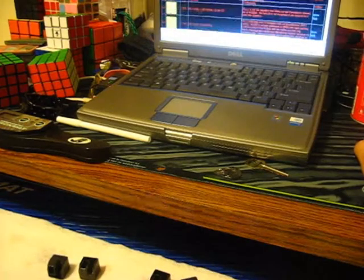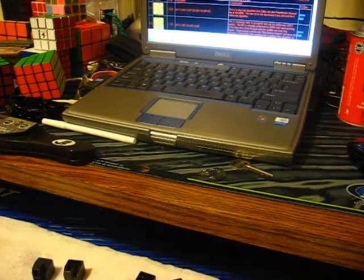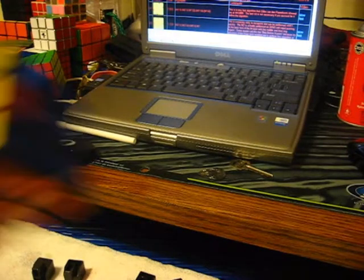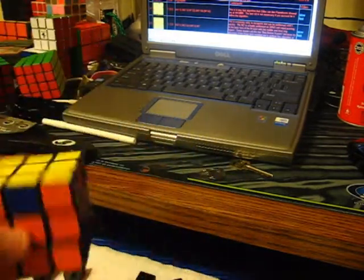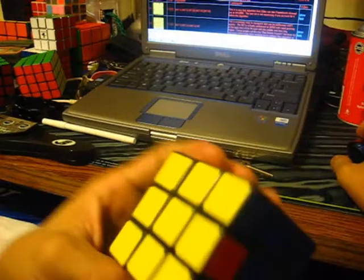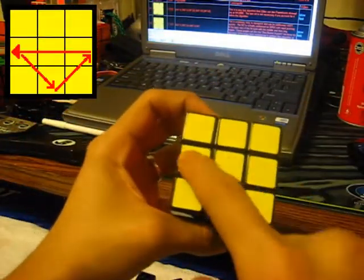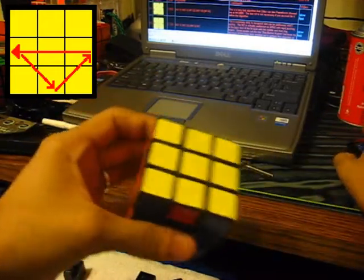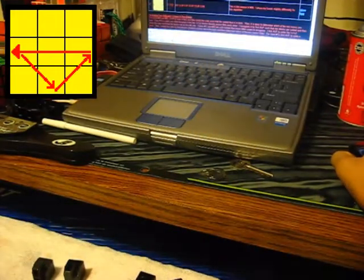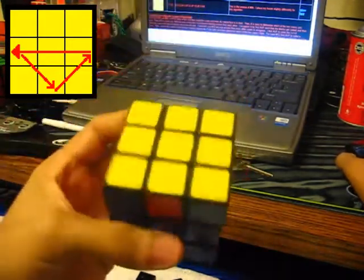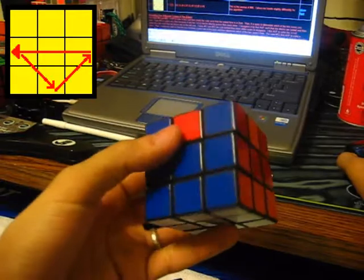Okay, so PLLs: say you ran into this regular U-perm, I guess is what they call it. It's just like this. On the CubeWhiz website, it's actually number 6, and I'm going to tell you how to recognize it.